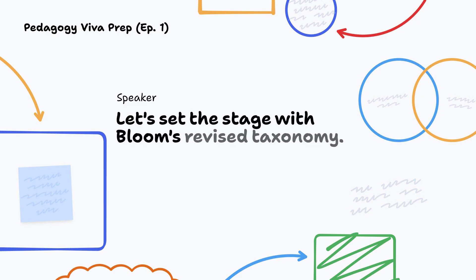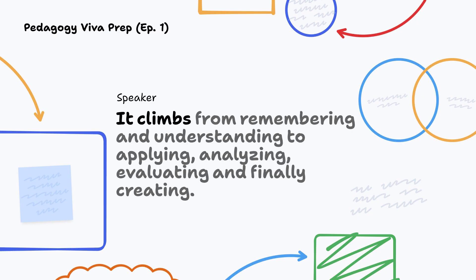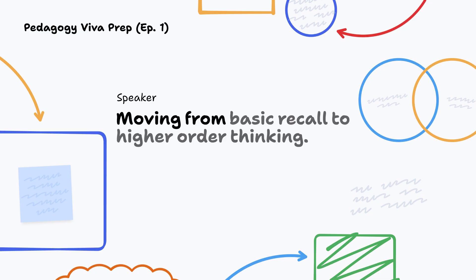Let's set the stage with Bloom's revised taxonomy. It climbs from remembering and understanding to applying, analyzing, evaluating and finally creating — moving from basic recall to higher order thinking.